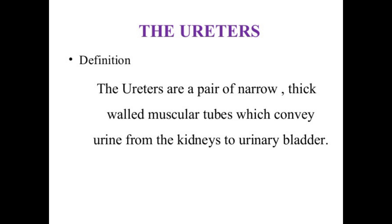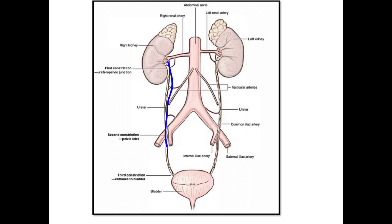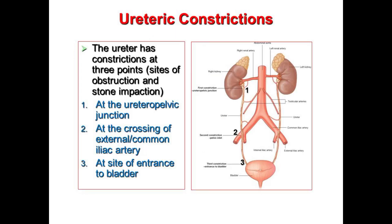The ureter is a pair of narrow, thick-walled muscular tubes which convey urine from the kidney to the urinary bladder.